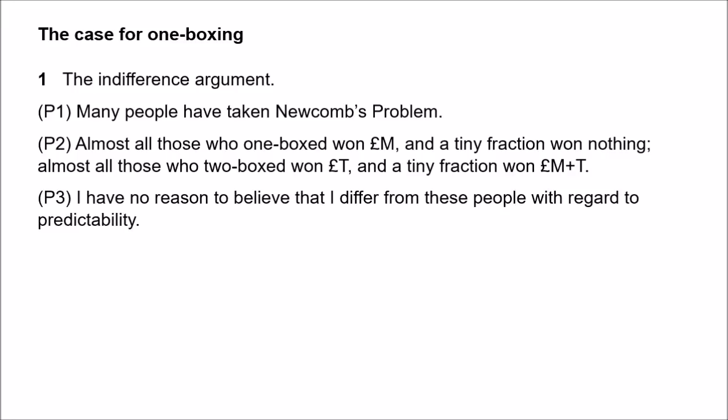With regard to premise three, that's just built into the statement of the problem — the predictor is, for you, near perfect. There's nothing special about you. So you have no reason to think you're going to beat these odds, and so you should one-box. Two-boxing will only get you the million and thousand when the predictor is wrong. But by stipulation, the predictor is almost always right. So when you see the one-boxers with their millions and the two-boxers with their thousands, wouldn't you rather be in the former group? The two-boxer's response is to accept the premises but resist the inference — yes, it's very likely you'll only get a thousand if you two-box, but at that point there was nothing in Box B anyway, and you're still getting the most of what you could have got given what was in those boxes when you made the decision.